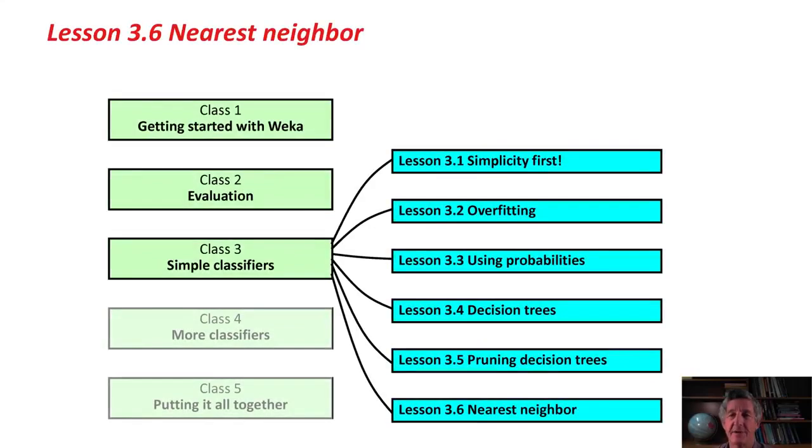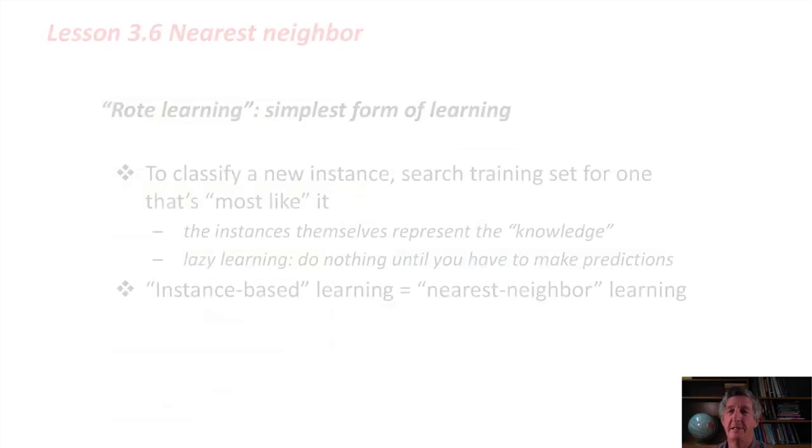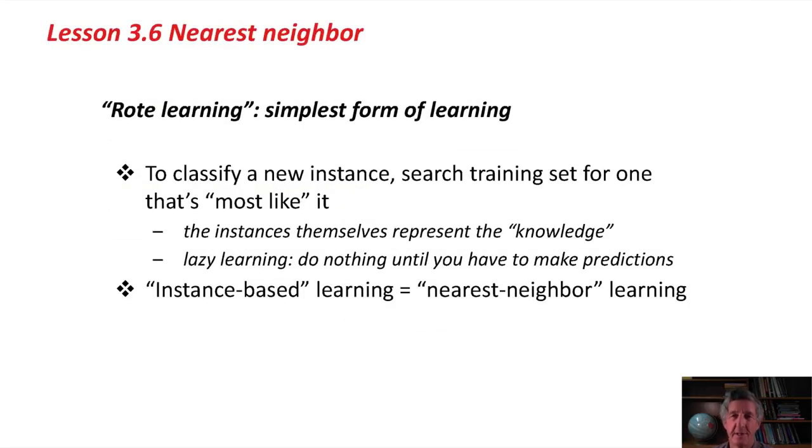We're going to talk here, in the last lesson of Class 3, about another machine learning method called the nearest neighbor, or instance-based machine learning method. When people talk about rote learning, they just talk about remembering stuff, without really thinking about it. It's the simplest kind of learning. A nearest neighbor implements rote learning. It just remembers the training instances.